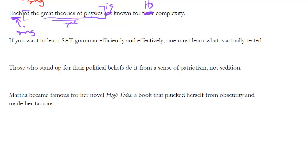If you want to learn SAT grammar efficiently and effectively, one must learn what is actually tested. This is an example of pronoun consistency, almost like a kind of agreement error where you've got to make sure your pronouns agree with each other. Notice we start off with 'you'—if you want to learn SAT grammar efficiently and effectively—then suddenly we switch to the indefinite pronoun 'one.' On the SAT, as in real life, we would not want to be inconsistent with our pronouns in this way. Either we can change 'one' to 'you,' or we can change 'you' to 'one.' We just got to make sure they're both the same.